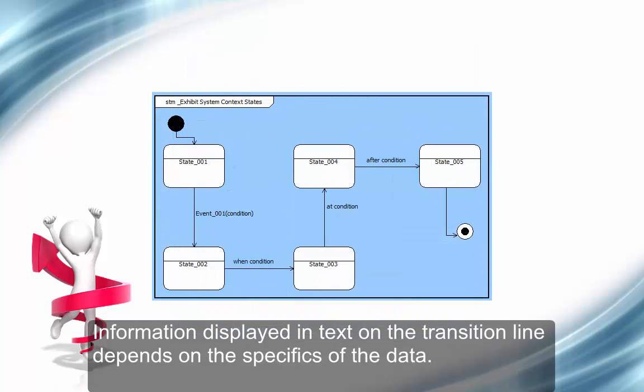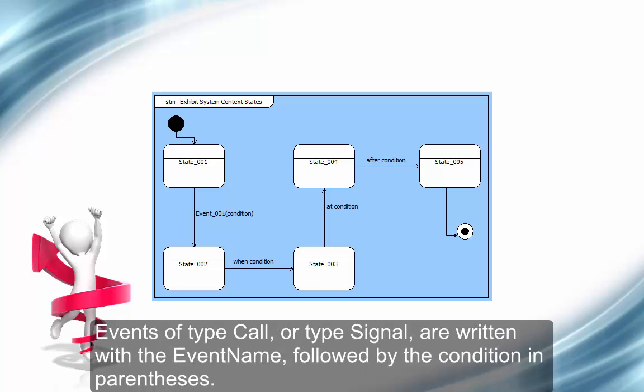Information displayed in text on the transition line depends on the specifics of the data. Events of type call or type signal are written with the event name, followed by the condition in parentheses.